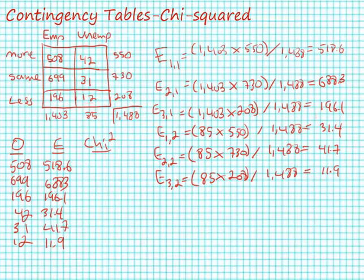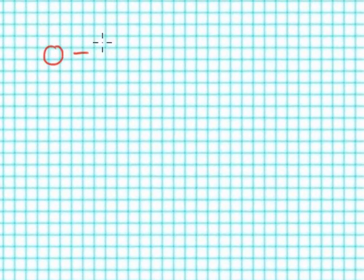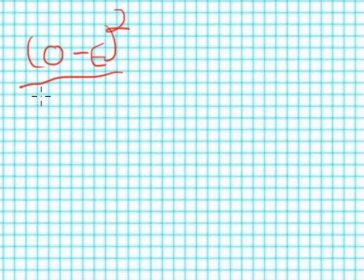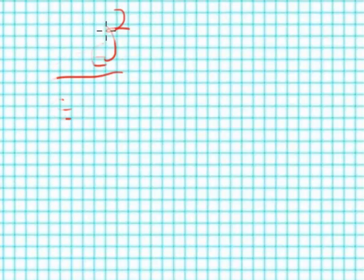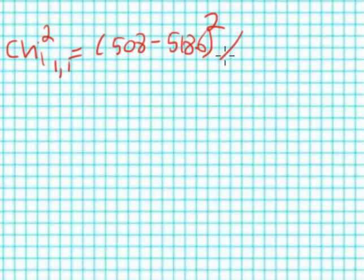Now we need to go to our chi-square formula — it's a relatively simple formula. I'm going to take my observed value minus my expected value, square that, and divide all of it by my expected value. I need to do this for all six cell values. So the chi-square statistic for cell (1,1) is going to be (508 − 518.6) squared divided by 518.6.